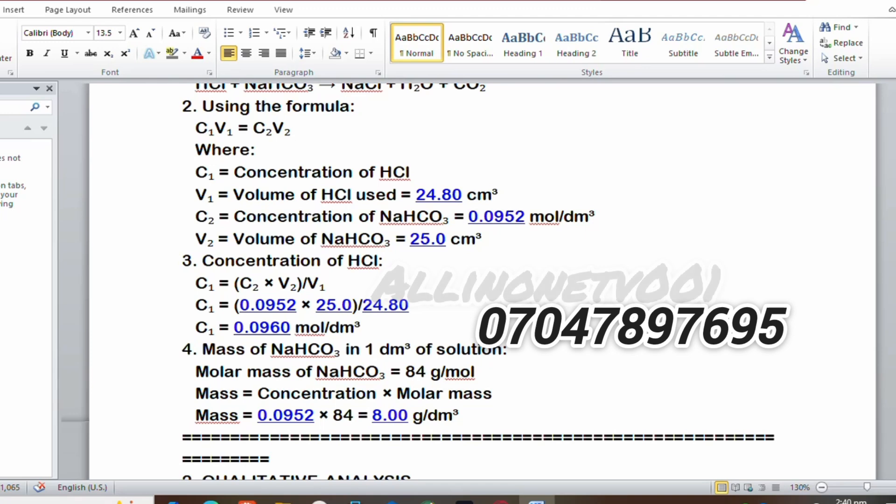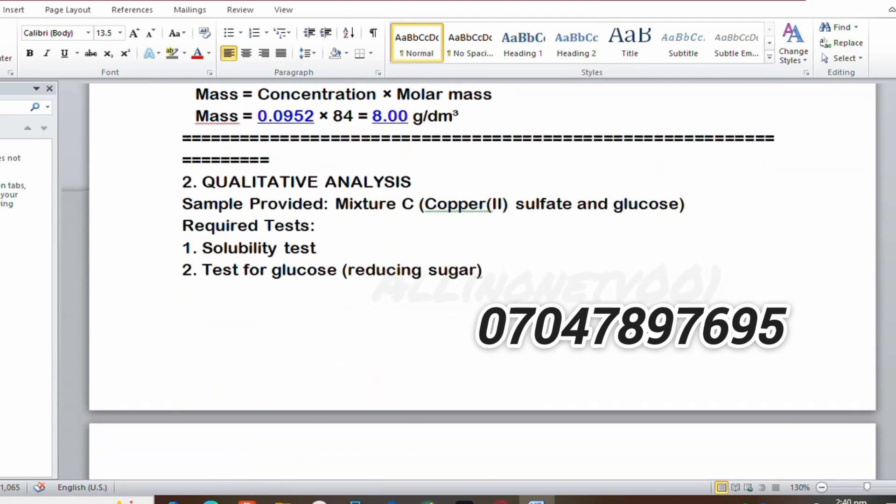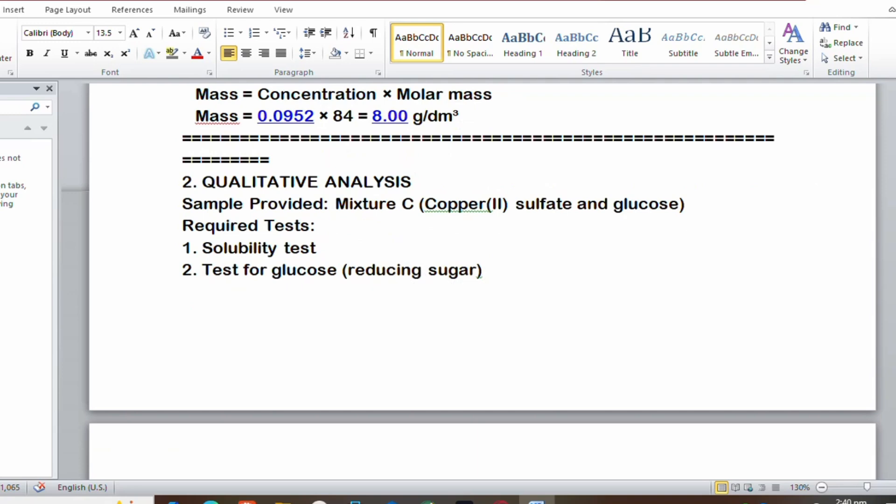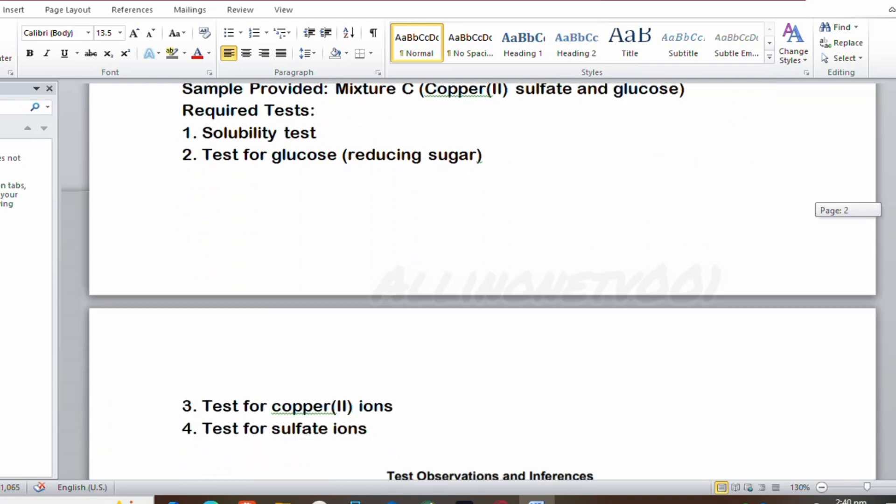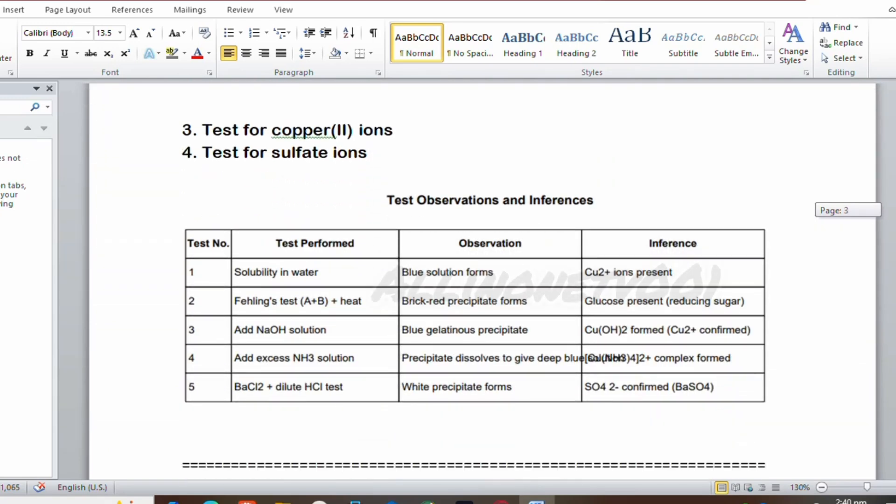Now let's come back to qualitative analysis, which is number two. The sample provided contains copper sulfate and glucose. It requires solubility tests, a test for glucose, a test for copper II ions, and a test for sulfate ions. Here are the observations.